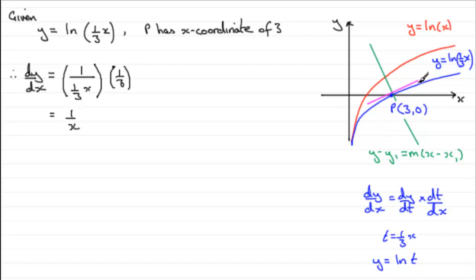So when it comes to working out what the gradient of the tangent is at this point P, what we need to do is just say when x is 3. When x equals 3, we can see that dy/dx equals 1 over 3.